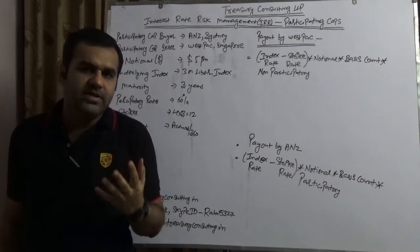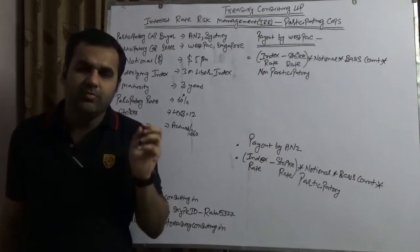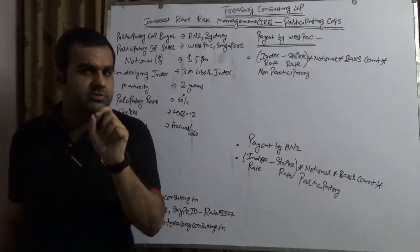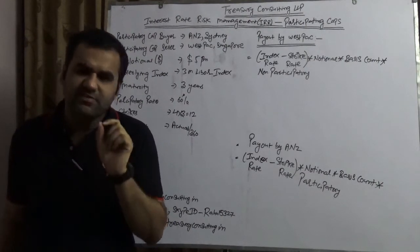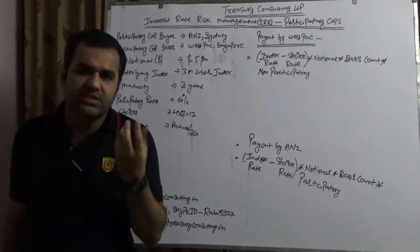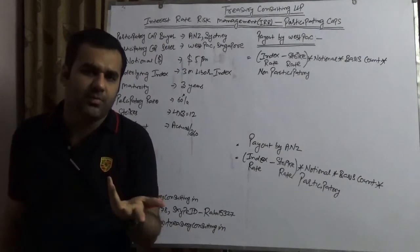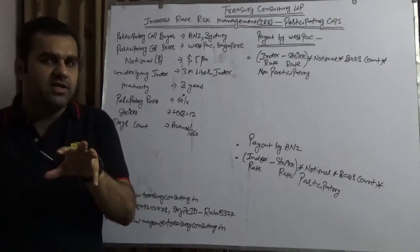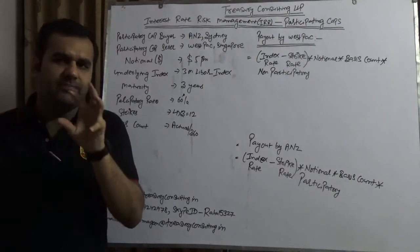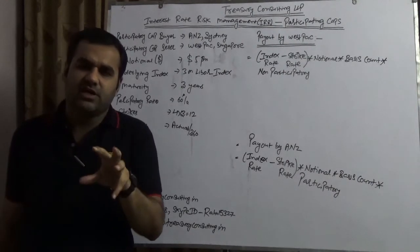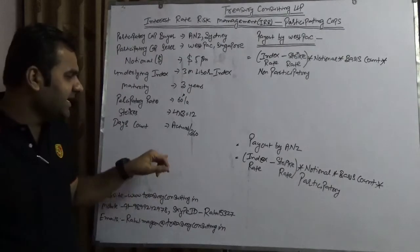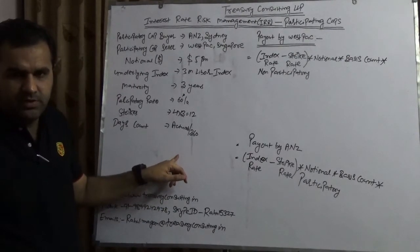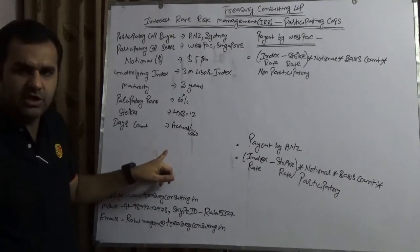Now on a 1 billion dollar notional, Goldman Sachs was paying 8 million dollars of premium. Although this was 0.80%, this is a very small amount for Goldman Sachs — nothing, just a penny to be honest. But still, as a treasurer, even though for a bank it is a penny, you need to understand that at least on the debit side of the P&L some flow is coming out, and that flow is 8 million dollars.